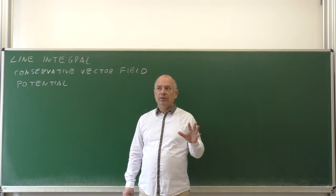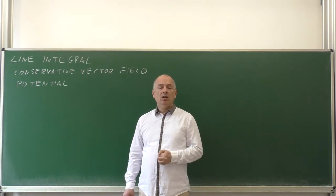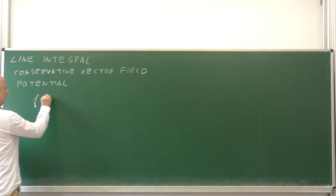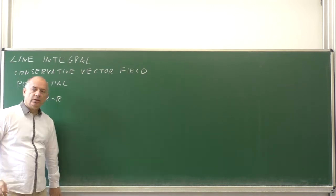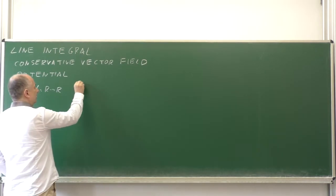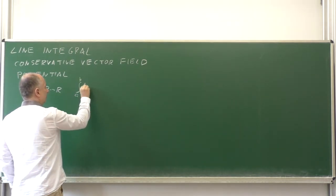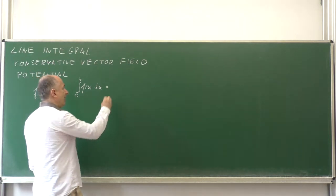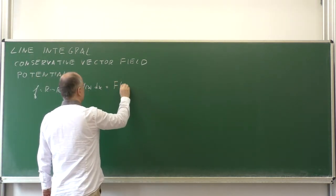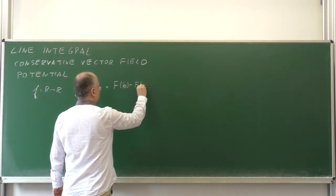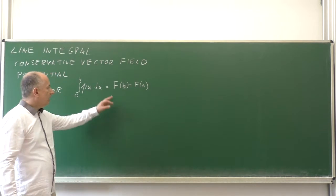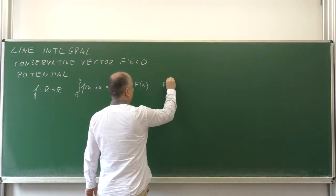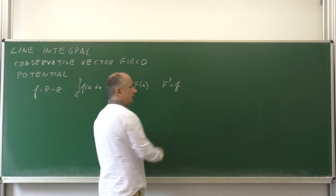Let me start with one simple property of a definite integral of a scalar function. If we have a scalar function f from R to R that is continuous in some interval, then the definite integral from a to b of f(x) can be evaluated as the antiderivative F at b minus the antiderivative at a. The antiderivative F of f is a function whose derivative is equal to f itself.